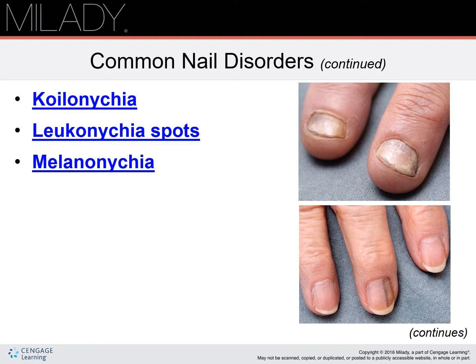Leukonychia spots, also known as white spots, are white discoloration of the nails, usually caused by minor injury to the nail matrix. It is a myth that these are caused by a vitamin or mineral deficiency. They appear frequently in the nails but do not indicate disease. As the nail continues to grow, the white spots eventually grow off and disappear.